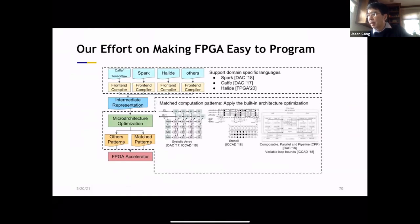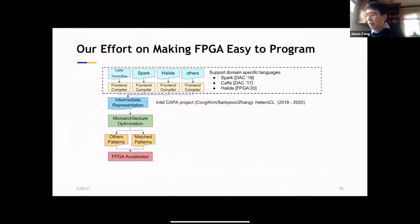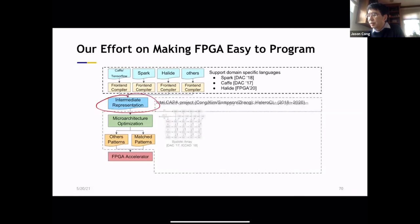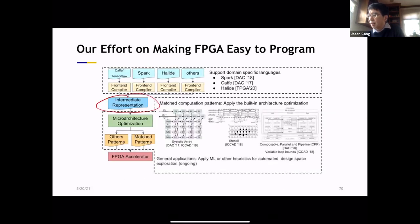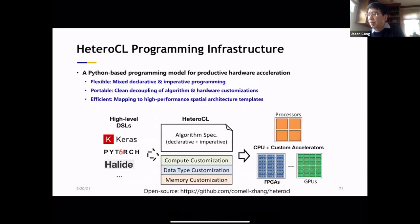So finally, I'd like to talk about the ways we support high level DSLs, for example, Spark, Halide and other programs. And the way we are doing that is actually we have the frontend compiler. We compile it into something we call intermediate representation. So this is, and then from there we go to architecture optimization. So this intermediate representation is the HeteroCL program, which we developed jointly with Professor Zhiru Zhang's group at Cornell. It allows us to compile these programs into HeteroCL program, which has a unique feature advantage.